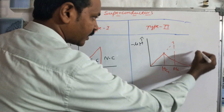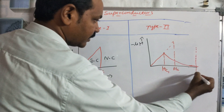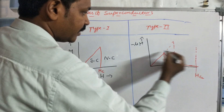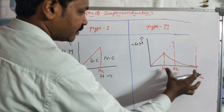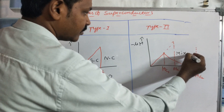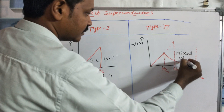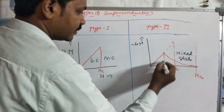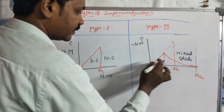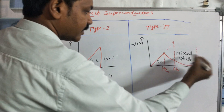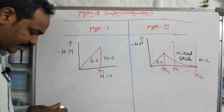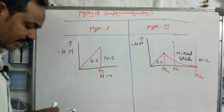For Type 2 superconductors, there are two critical fields: Hc1 and Hc2. Between Hc1 and Hc2 there is a mixed state, also called the vortex state. Before Hc1 it behaves as a superconductor, and after Hc2 it is a normal conductor.